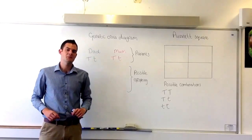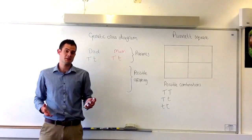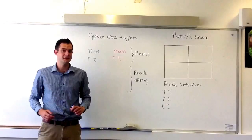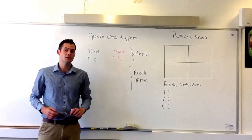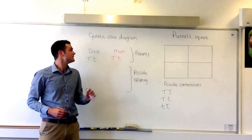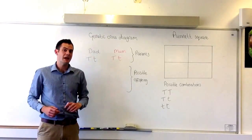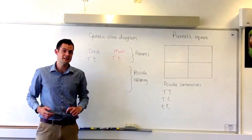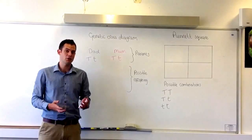In the last video we looked at how to interpret Punnett squares and calculate the probability of being a tongue roller or non-tongue roller. In this video we're going to complete a genetic cross diagram and again calculate the probability of being a tongue roller or non-tongue roller.